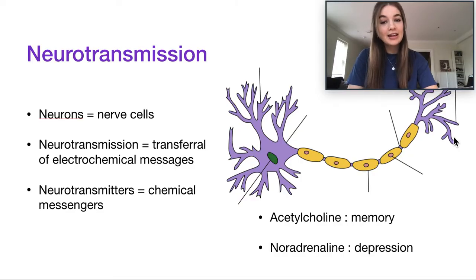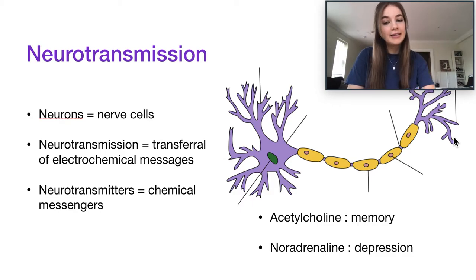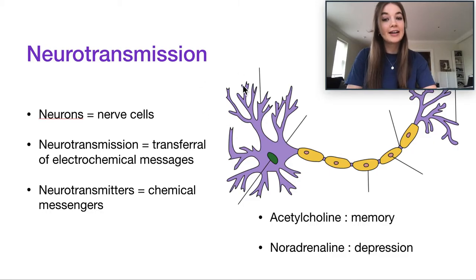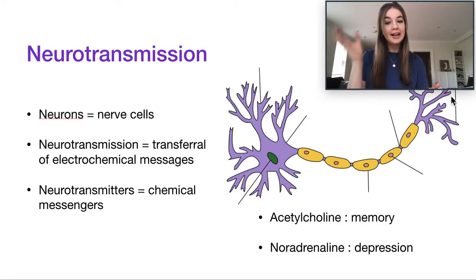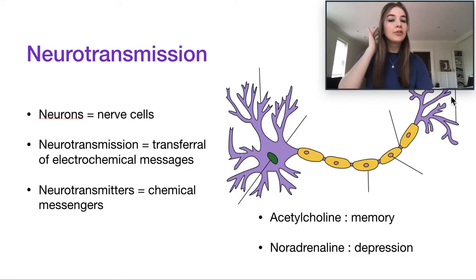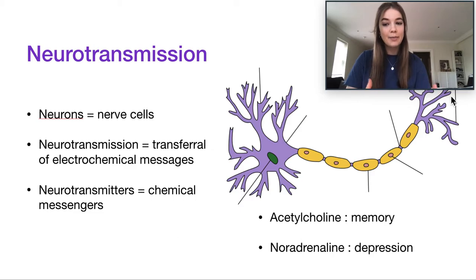The terminal buttons are where neurotransmitters — another type of messenger — are released and passed on to the next neuron, where they're received on the dendrites, starting the whole process over. So it goes: dendrites, soma (the cell body), axon, terminal branches, terminal buttons, and then into the synapse. The synapse is the gap between two neurons — where the terminal buttons of one neuron meet the dendrites of the next. Neurotransmitters are our body's natural chemical messengers.